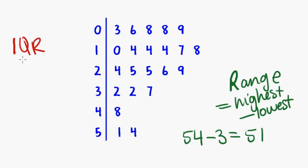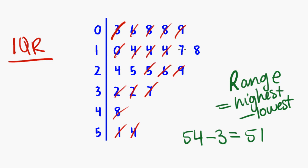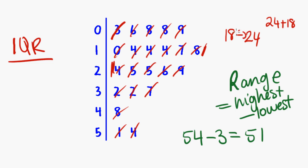What about the interquartile range? We need a little more calculation, but it's much the same as with a list. The first step is to find the median — we count upwards from the bottom and downwards from the top until we get to the middle. Counting in from each end, I end up between 18 and 24, and halfway between those two is found by adding them together and dividing by two: 24 plus 18 divided by 2 equals 21. So my median is 21.